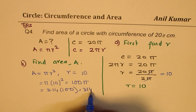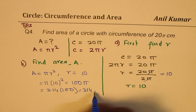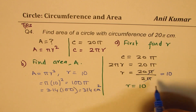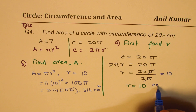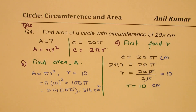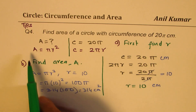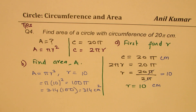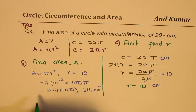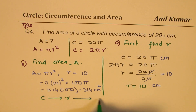That means 100π. If you want the exact value, π is 3.14, so 3.14 times 100 equals 314 centimeters squared. That is how we go from circumference to radius and from radius to area — first find R from circumference, then find area from R.